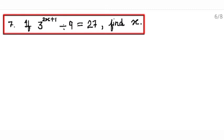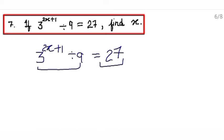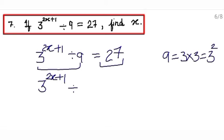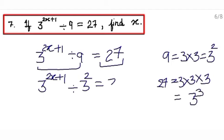Question number 7: if 3 raised to the power 2x plus 1 divided by 9 equals 27, find x. To find the value of x we need to compare both sides, but for comparison their bases should be equal. This 9 can be written as 3 × 3, which means 3 raised to the power 2 — so write it here: 3 raised to the power 2. 27 can be written as 3 × 3 × 3, which means 3 raised to the power 3, so write it here: 3 raised to the power 3.